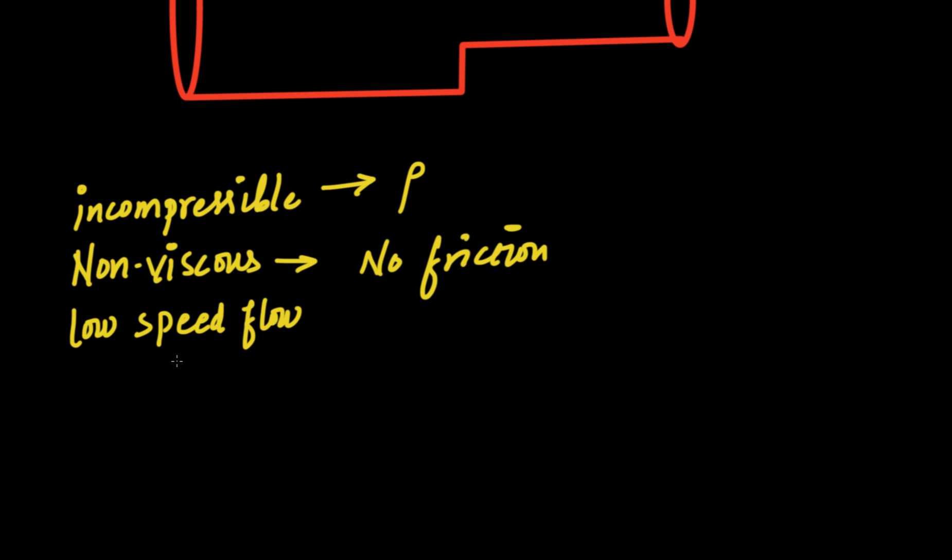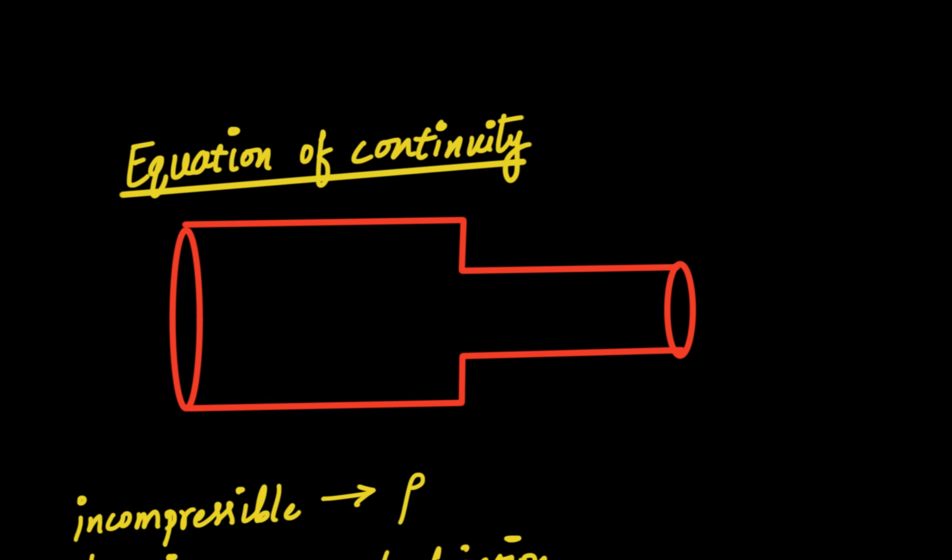Also we want the fluid to flow at a low speed because when the fluid flows at low speed, the flow is steady. It is comparatively easier to figure out the mathematics behind steady flow. If the flow speed increases, then the flow becomes really turbulent. Therefore, we don't want to cross that boundary. We'll assume that the fluid is incompressible, non-viscous, and flowing at a low speed inside a tube.